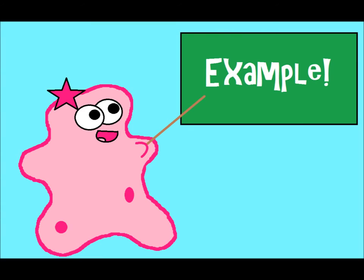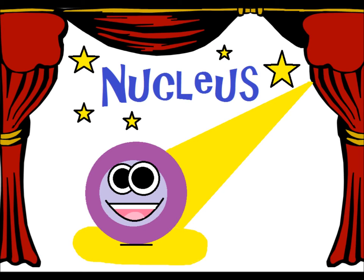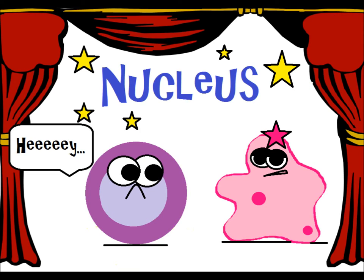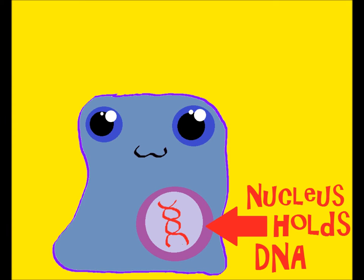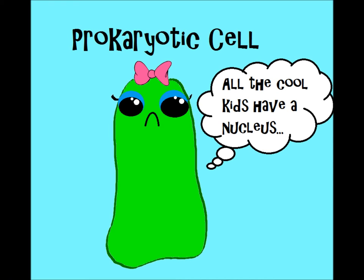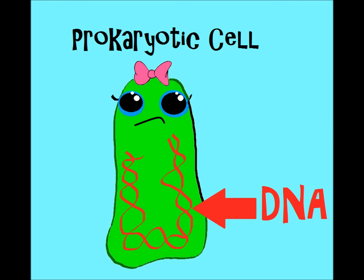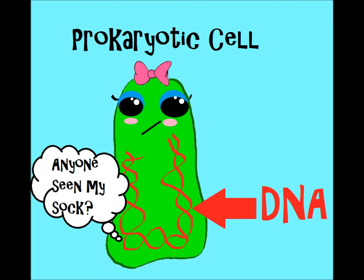A very famous example of a membrane-bound organelle is the nucleus — it's kind of like the brain of the cell. It controls a lot of the cell's functions and also holds the genetic material for eukaryotes, so the nucleus holds the DNA. Prokaryotes do not have a membrane-bound organelle, so they do not have a nucleus. Their DNA is organized in a different manner, and it's not as neatly organized as it is in a eukaryote.